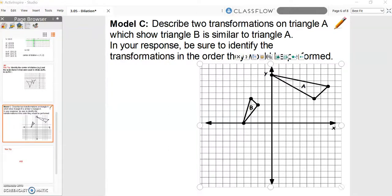Model C. Describe two transformations on triangle A which shows triangle B is similar to triangle A. In your response, be sure to identify the transformations in order they are performed.